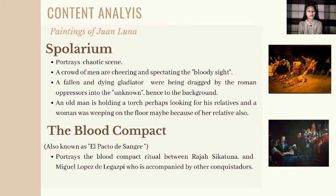Overall, Juan Luna used a strong and dark use of reds and browns to show the darkness and despair, which is the theme of the painting, since it depicts the Roman morgue with dead bodies.